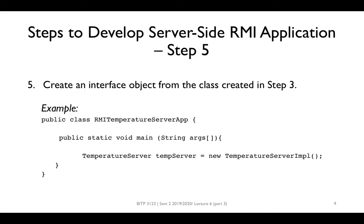In the fifth step, we need to create an object of the interface from the class we created in step 3. Usually, we create this object in another class. In our lesson, we have created the interface TemperatureServer and a class that implements it. Here, we create an object named TemServer of type TemperatureServer from the class TemperatureServerImpl.